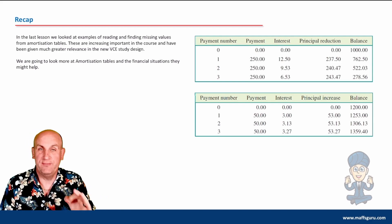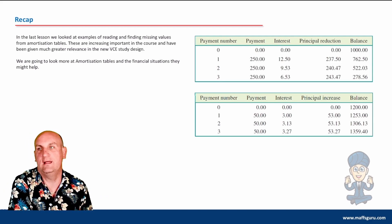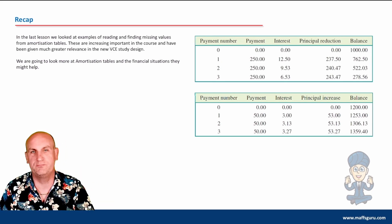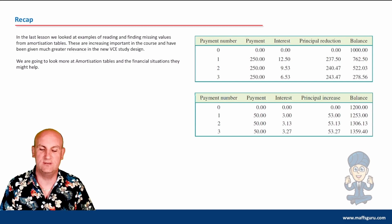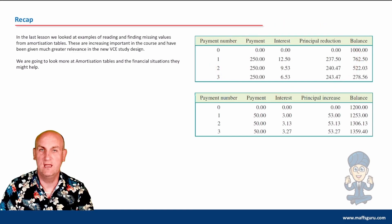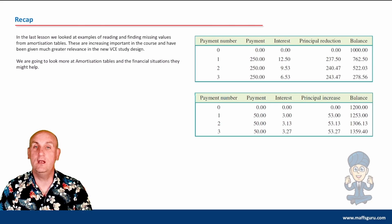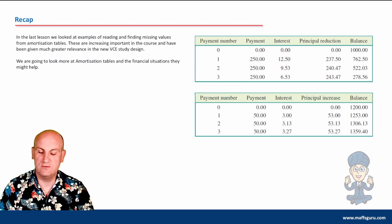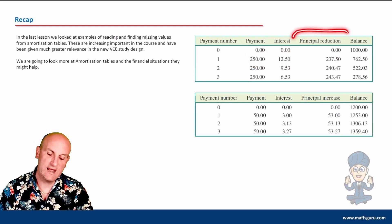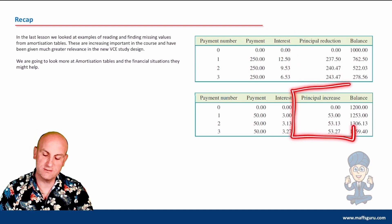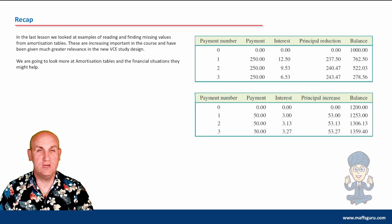This builds on a video I did a little while ago on amortization tables, which is basically a way of showing payments, principal reductions, and so on. In the previous video we looked at the idea of principal reductions, where maybe you take out a loan and you've got an opening balance, you're making some payments, the bank or your provider is charging you some interest, and then we would have to understand what the principal reduction - or in some situations principal increase - would actually show.